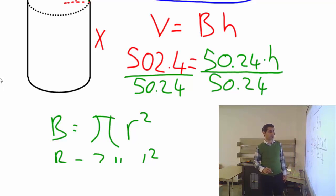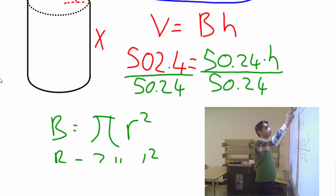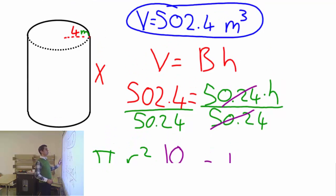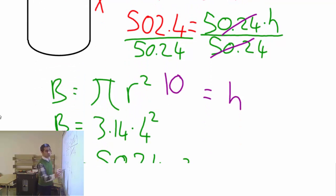Now I want to leave the height alone and let's divide this with the same number. Let's divide that with the same number, 50.24. And now height is alone.